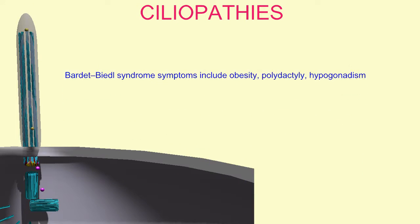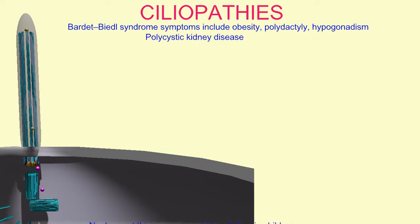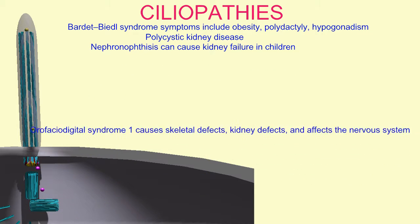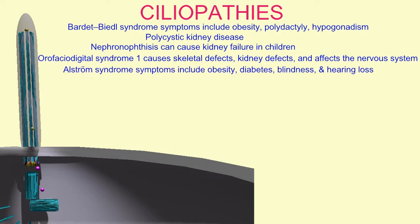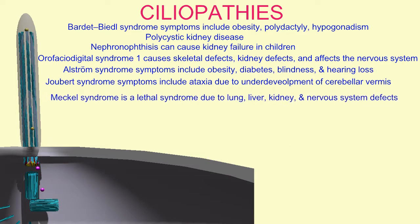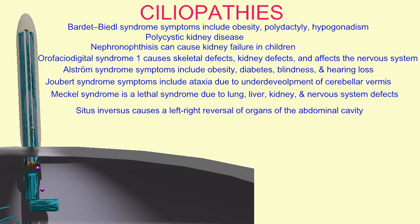Because the primary cilia have so many roles in embryonic development and in signaling, mutations in the genes expressed in the primary cilia can therefore cause a number of disorders known as ciliopathies.